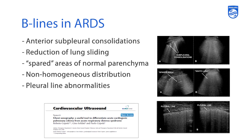There's also a reduction of lung sliding, which is more difficult to show in a still image, but we talked about this in our pneumothorax lecture — patients who have absent lung sliding may not necessarily have a pneumothorax but may have other pathologies. ARDS was in that list. You see spared areas of normal parenchyma in the second image — areas where there are no B-lines because it's normal parenchyma, giving you this non-homogenous distribution.